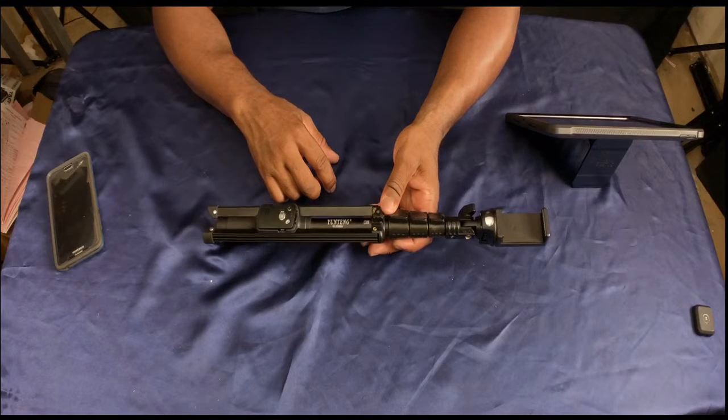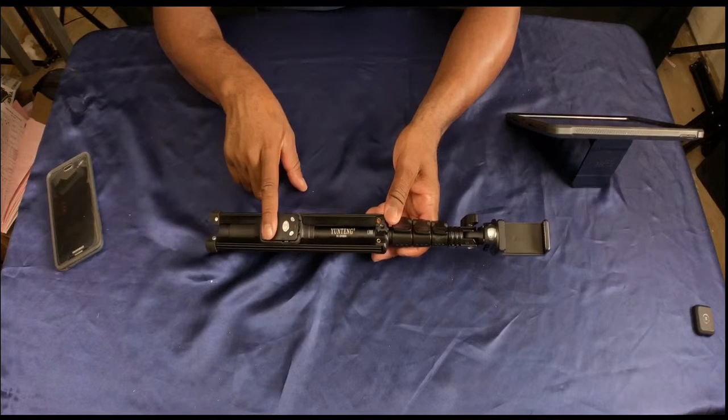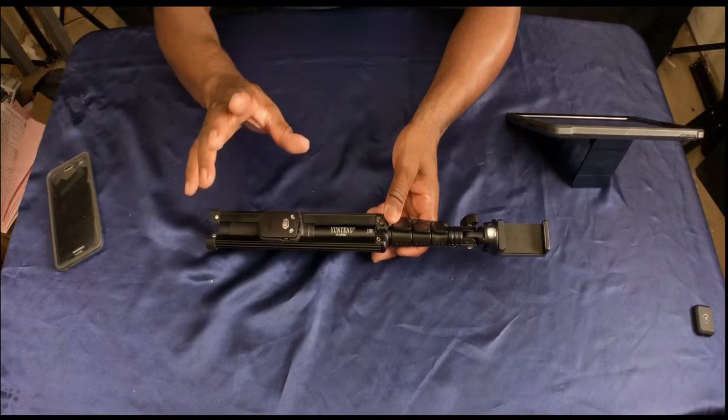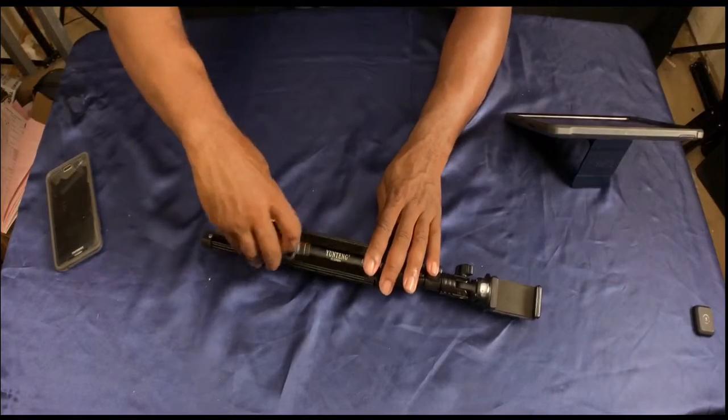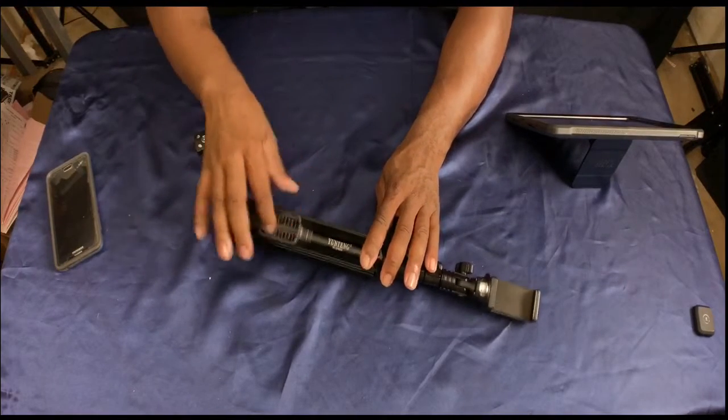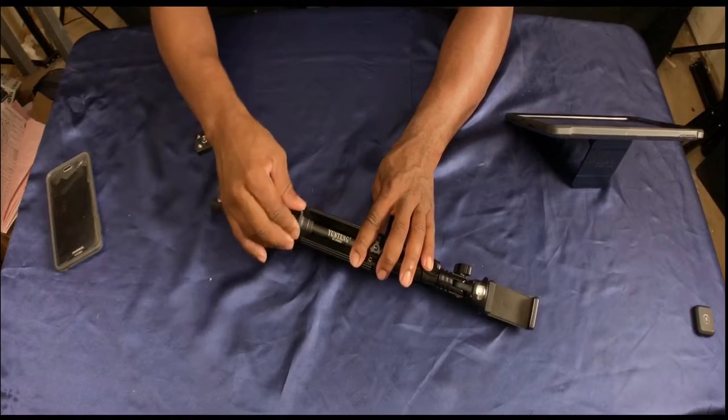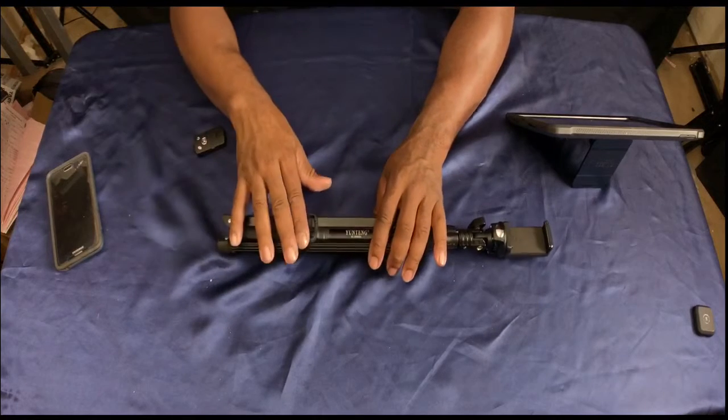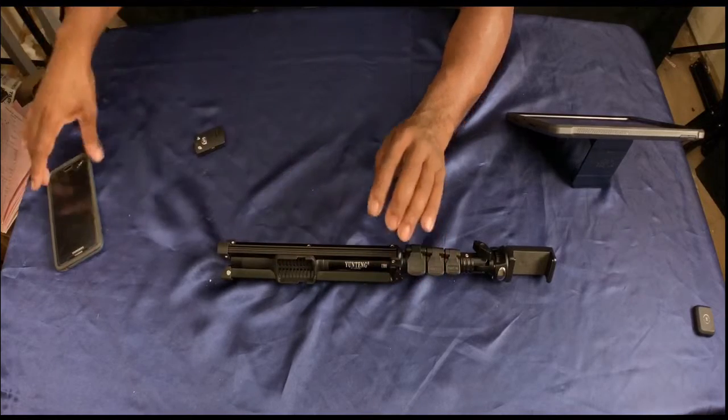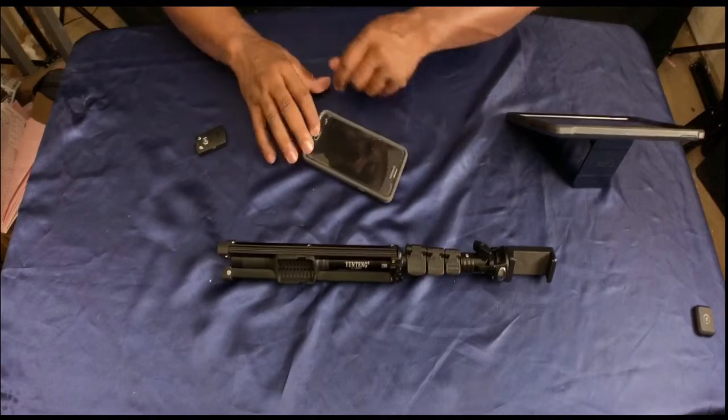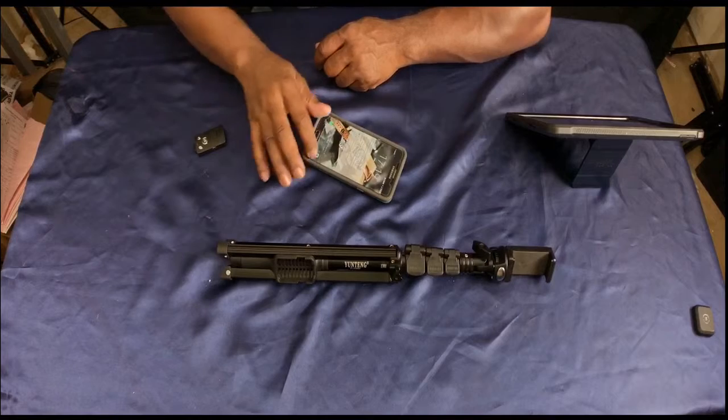You're gonna notice there's a remote down here and the remote, it's good, it works. Pull it out, you can see it sits in this rubberized kind of housing here and it's secure. You don't have to worry about it falling out, it sits in very secure. And I'm going to use my Note 5 because I'm filming with the iPhone 8.